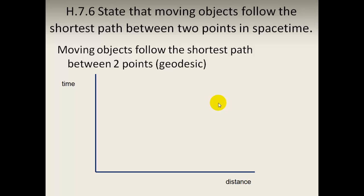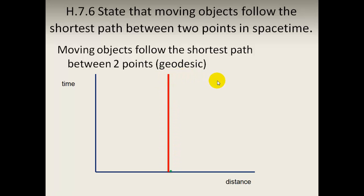Moving objects follow the shortest path between two points in space-time. For a static object, the starting point and final point are connected by the shortest distance — the geodesic — drawn in four-dimensional space-time. For a moving object, the path from one point to another will follow a straight line, or the straightest line, in four-dimensional space-time. This is also a geodesic.